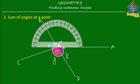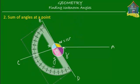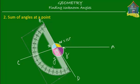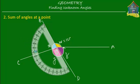Angle W starts from 0 until 121, so W equals 121 degrees. How about X? I take the protractor, rotate it, place it on OB, and see the angle it makes with OC. X is equal to 76 degrees.